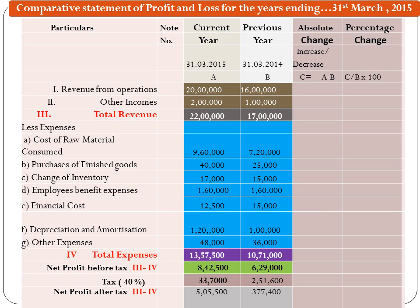The Expenses are shown under different heads, A to G: Cost of Raw Material Consumed, Purchases of Finished Goods, Change of Inventory, Employees Benefit Expenses, Financial Cost, Depreciation and Amortization, Other Expenses, and Total of Expenses. The difference between Total Revenue and Total Expenses will be Net Profit Before Tax, and then we subtract the tax to get Net Profit After Tax.